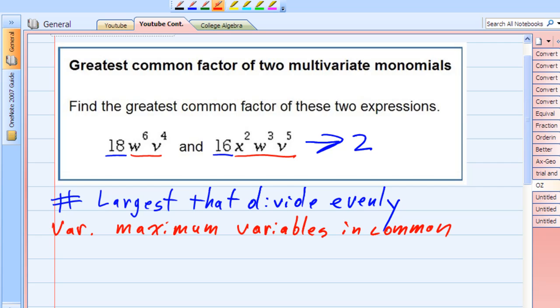So looking at those variables, it looks like they both have some W's. I see a W6 and a W3. So they both have W's, but the maximum number of W's that they have in common is three.